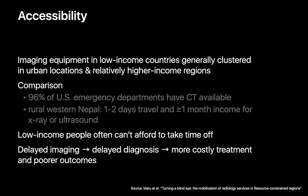Accessibility can also be a significant problem in low-income countries. What imaging equipment is available tends to be clustered in urban locations where the wealthiest folks live, which can leave the majority of people underserved. For example, a person living in rural Nepal may need to travel one or two days and sacrifice up to one month's income just to get an x-ray or ultrasound. Even if folks could afford the imaging, they might not always afford to take time off to travel for the study, which contributes to more delayed diagnoses, more costly treatment, and poorer health outcomes.